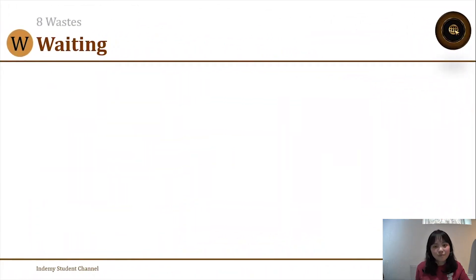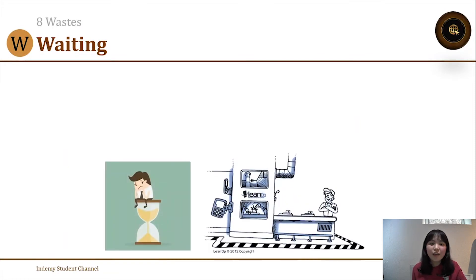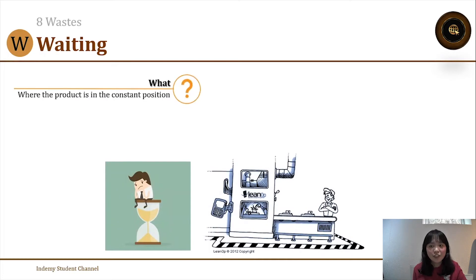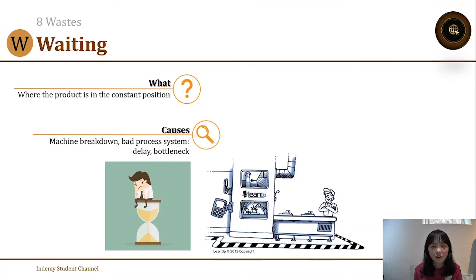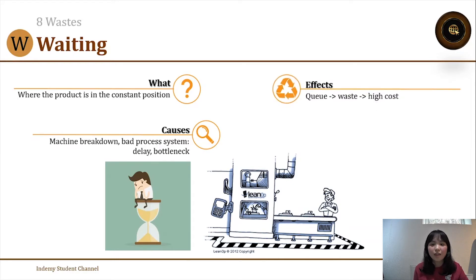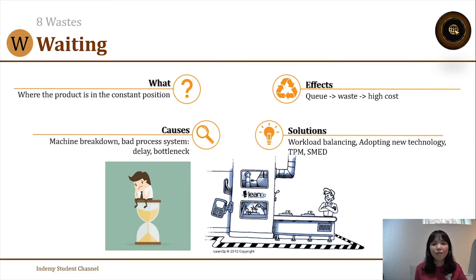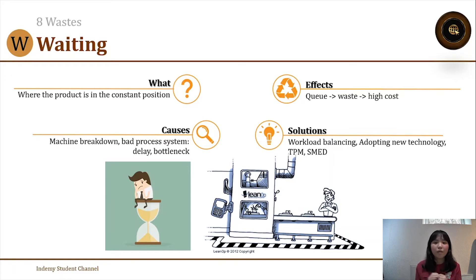The next waste is waiting. We all hate waiting, and waiting is a waste of time. By definition, it is when a product is in a constant position — not moving. It can be caused by machine breakdown or a bad process system, leading to delays, bottlenecks, longer queues, higher wait times, and higher costs. Solutions include workload balancing, adopting new technologies, TPM (Total Productive Maintenance), and SMED (Single Minute Exchange of Die).